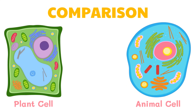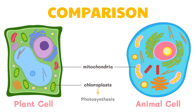Both animal and plant cells have mitochondria, but only plant cells have chloroplasts. Plants don't get their sugar from eating food, so they need to make sugar with the help of sunlight. This process, known as photosynthesis, takes place in the chloroplasts. Once the sugar is made, it is broken down by the mitochondria to make energy for the cell. Because animals get sugar from the food they eat, they do not need chloroplasts — just mitochondria.